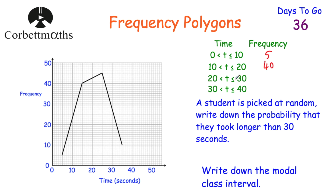From 20 to 30, the midpoint is 25, so going from 25 up the frequency is 45. Finally, between 30 and 40, the midpoint is 35, and the frequency is 10. So we've completed our frequency table. The question says: a student is picked at random — write down the probability that they took longer than 30 seconds to complete this puzzle. So press pause now to work out that question yourself.